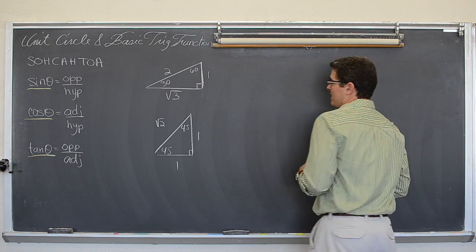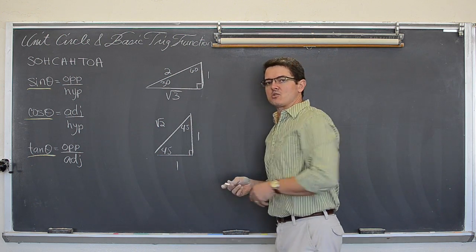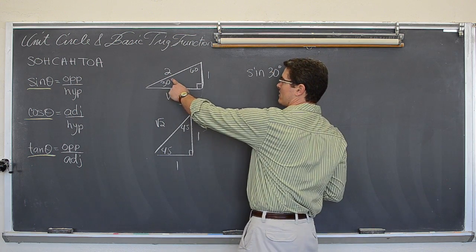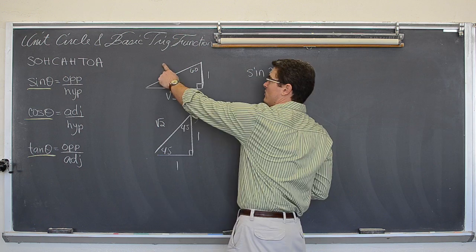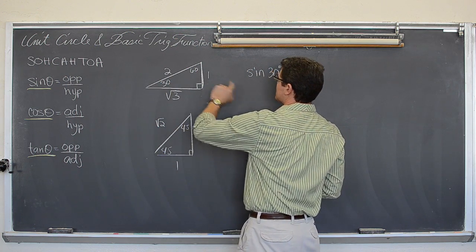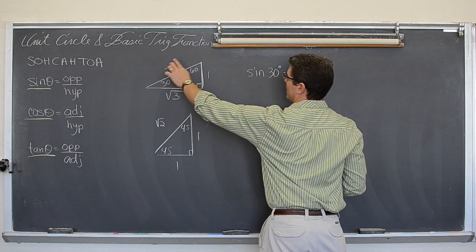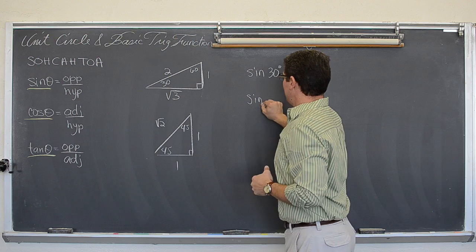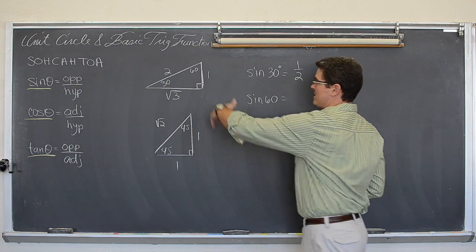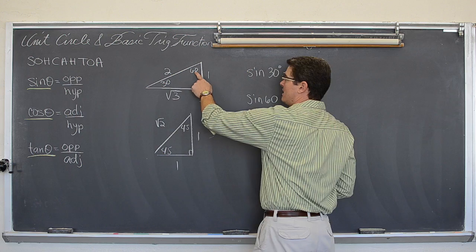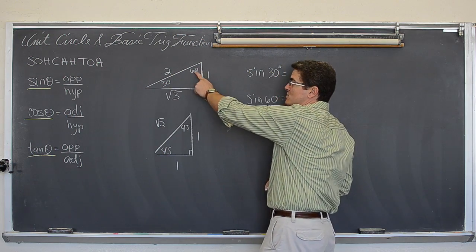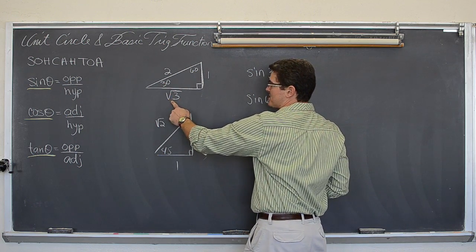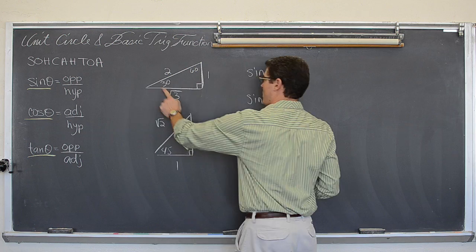So if I wanted to find, just based on these triangles, the sine of 30 degrees — the sine of 30 degrees is opposite over hypotenuse, so it would be one half. The sine of 60 degrees, from the 30-60 triangle, the sine of 60 is opposite over hypotenuse, or square root of 3 over 2, because the one is adjacent — I am referencing another angle in the triangle.